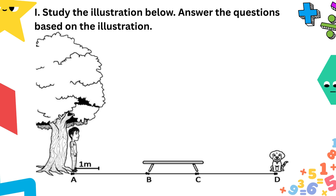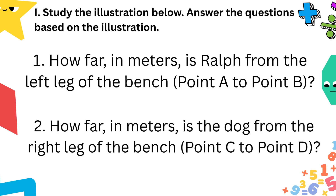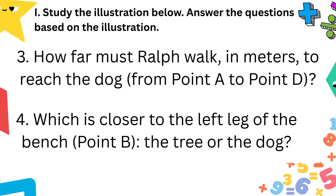For the evaluation, study the illustration below and answer the questions based on it. Number 1: how far in meters is Ralph from the left leg of the bench? Number 2: how far in meters is the dog from the right leg of the bench? Number 3: how far must Ralph walk in meters to reach the dog? Number 4: which is closer to the left leg of the bench — the tree or the dog?